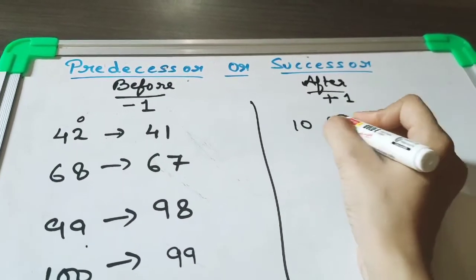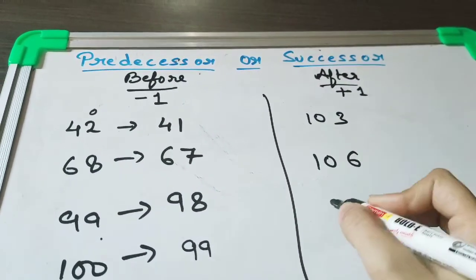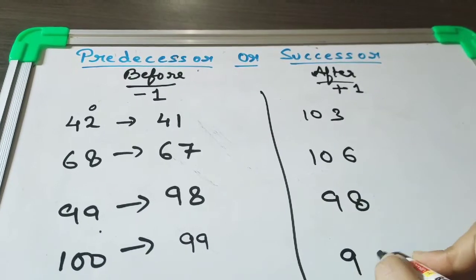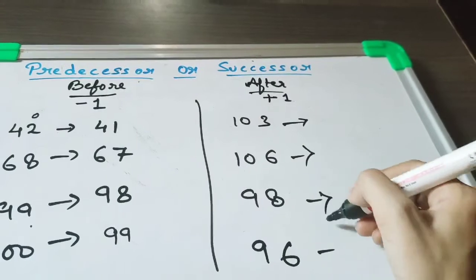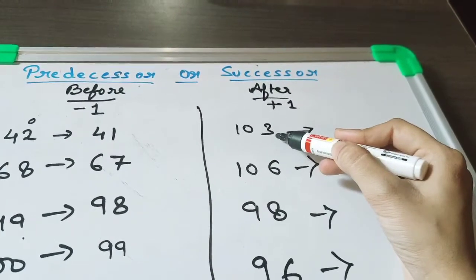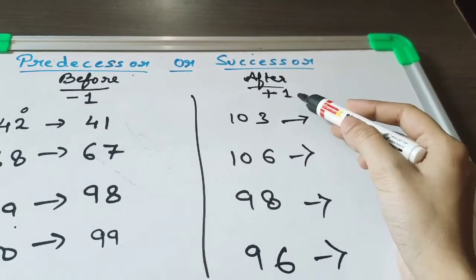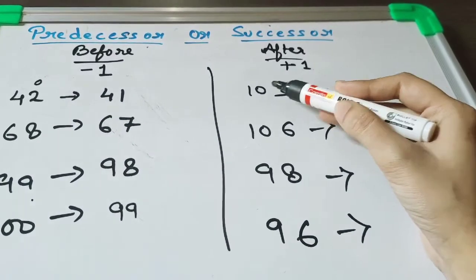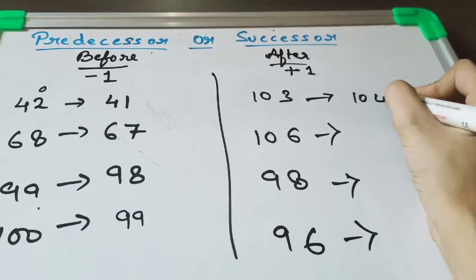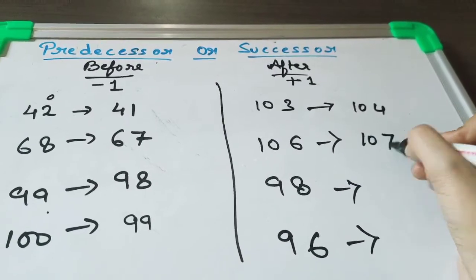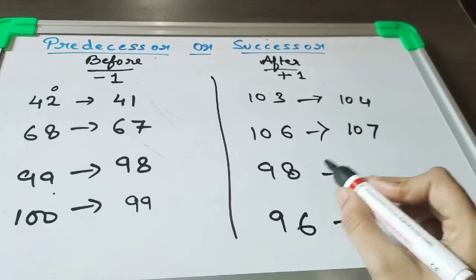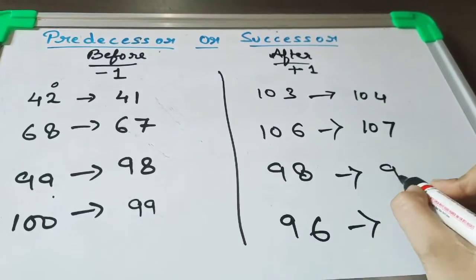For example, I am taking this number. Now see here, this is 103. Successor means plus 1, so we have to add 1. 103 plus 1, that is 104. 106 plus 1, that is 107. 98 plus 1 is 99. 96 plus 1, 97.